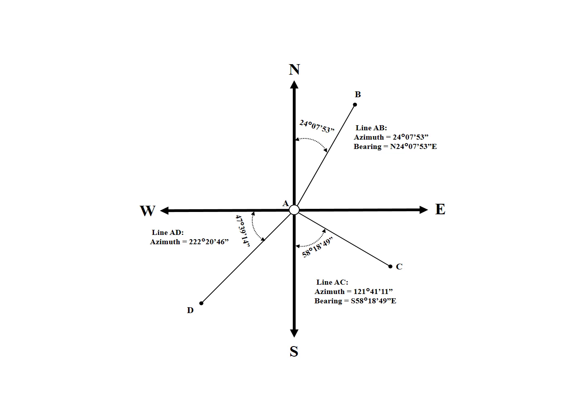The bearing of line AD is referenced from south towards the west, so the given angle must be subtracted from 90 degrees, which results in a bearing of south 42 degrees, 20 minutes, 46 seconds west.